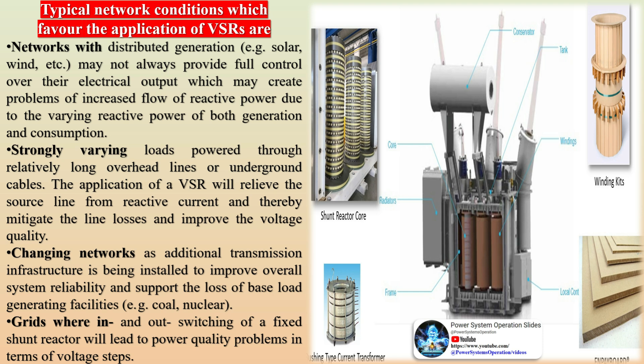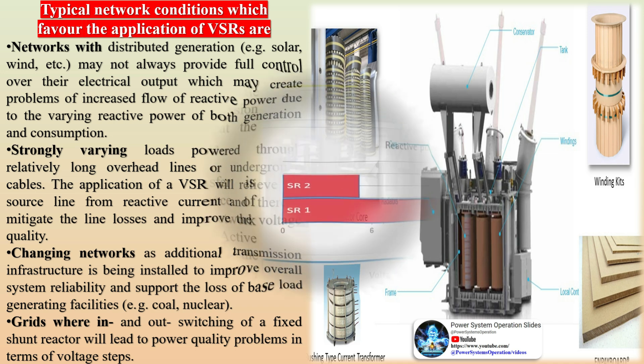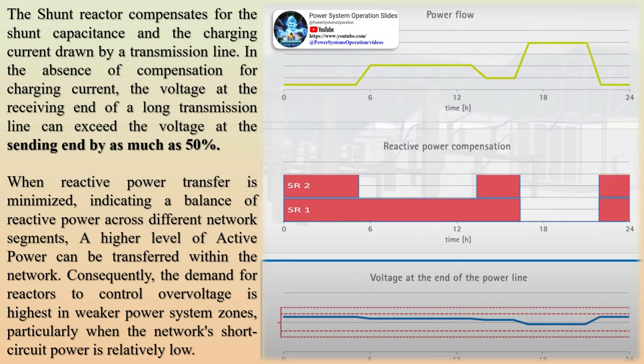Main technical benefits of VSRs compared to fixed reactors include the smoothing of voltage jumps, flexibility to the load, the ability to interact with SVCs, the possibility of relocation to another part of the grid, and the footprint reduction of a VSR replacing several fixed rating shunt reactors and circuit breakers.